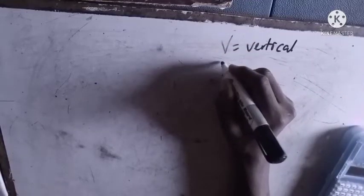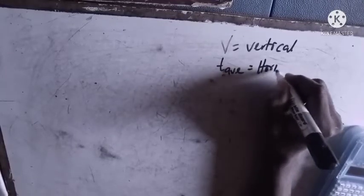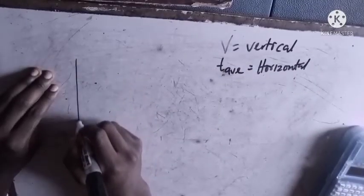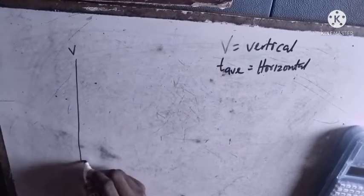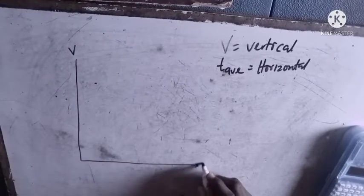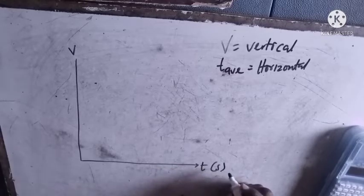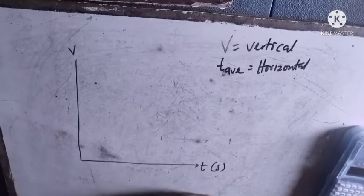When you have drawn your coordinates, you begin to plot. You have your v here - what's the highest value for v? 62.222.